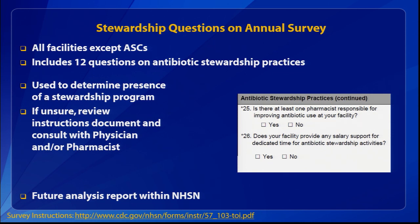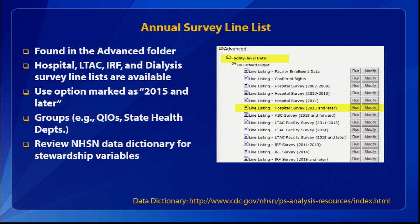We are planning to create a future analysis report in NHSN that will let you see which of the seven elements you're meeting and which ones you aren't based on the survey, and that will probably be coming in another year or so. For now, we do have the annual survey line list available for both groups and facilities. It's found in the advanced folder within the subfolder facility level data. We have line lists available for hospitals, LTACs, IRF, and dialysis clinics, and you can review each answer to each of the survey questions. You'll want to use hospital survey 2015 and later. You can also consult the NHSN data dictionary for which variables correspond to which question.